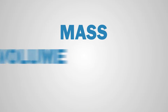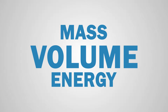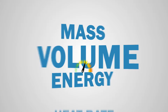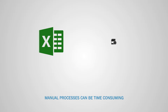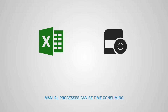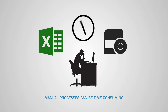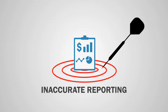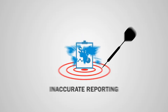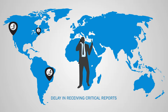When dealing with mass, volume and energy conversion complexities, such as heat rate, these need to be taken into account for accurate results. Using Excel and other manual software processes to solve this problem can be time-consuming, costly to maintain and lead to inaccurate reporting. This can result in traders having delays in receiving critical reports to trade against.